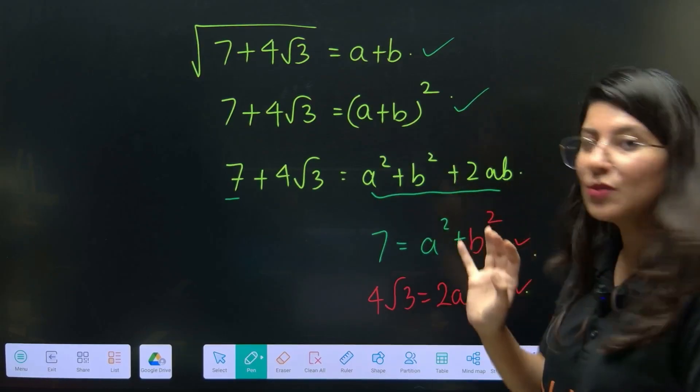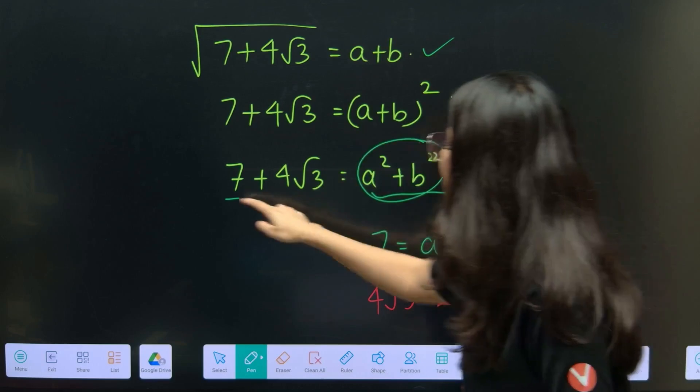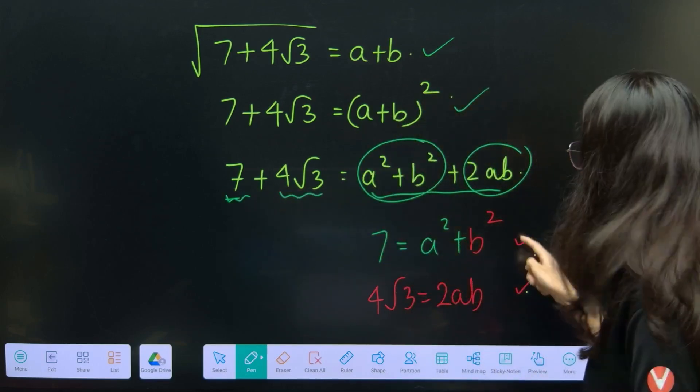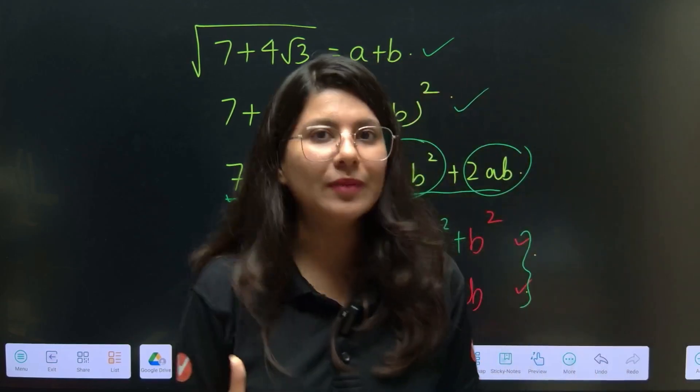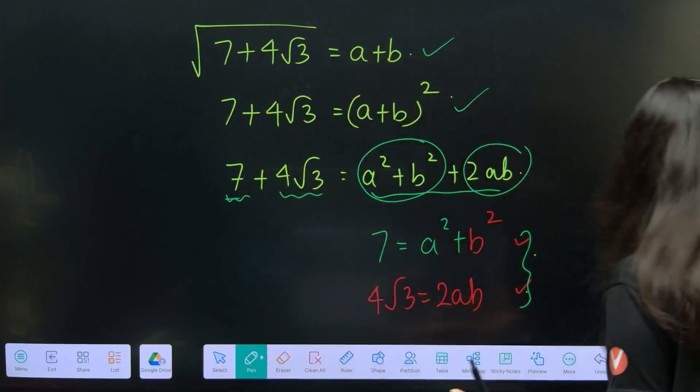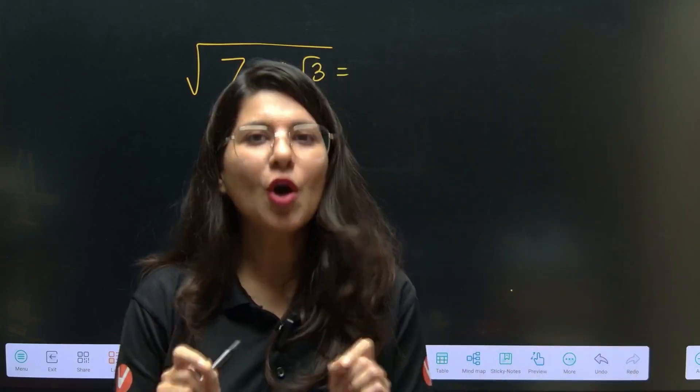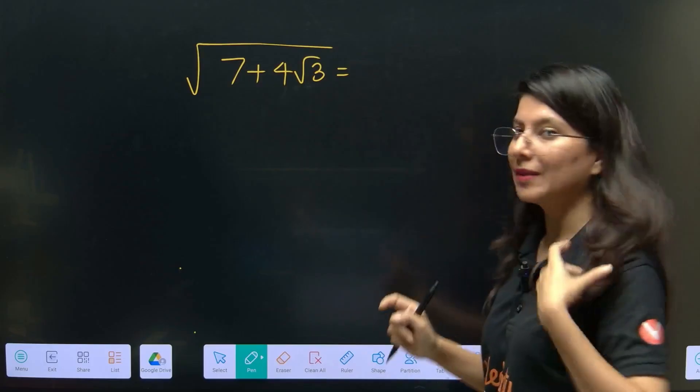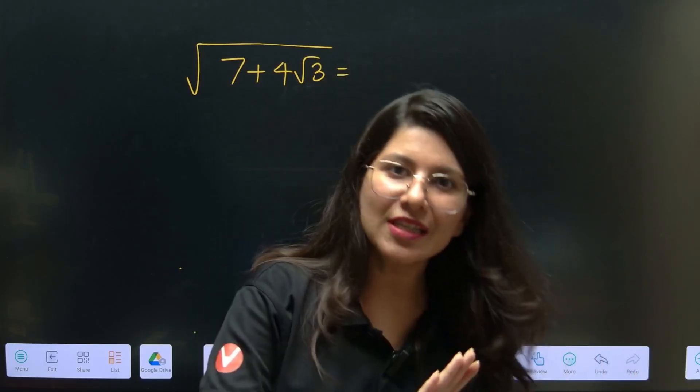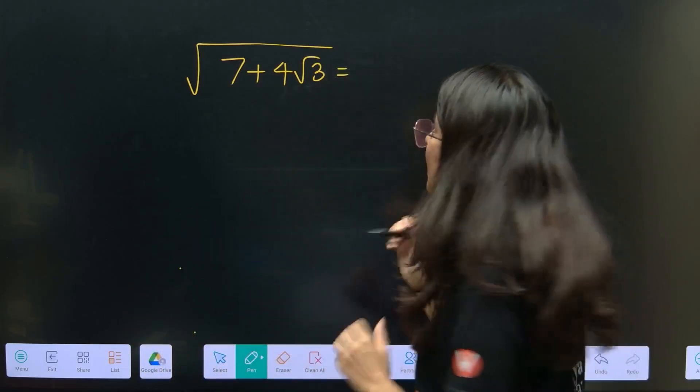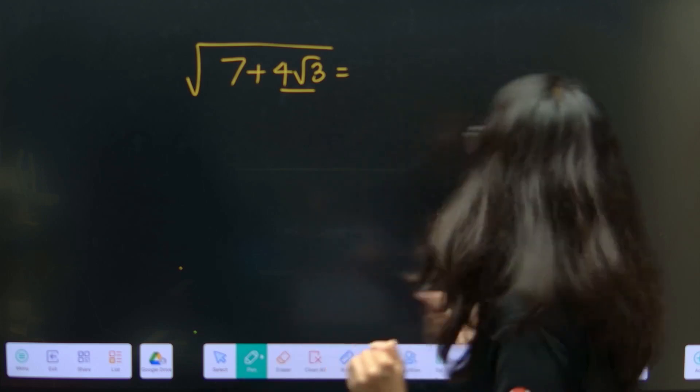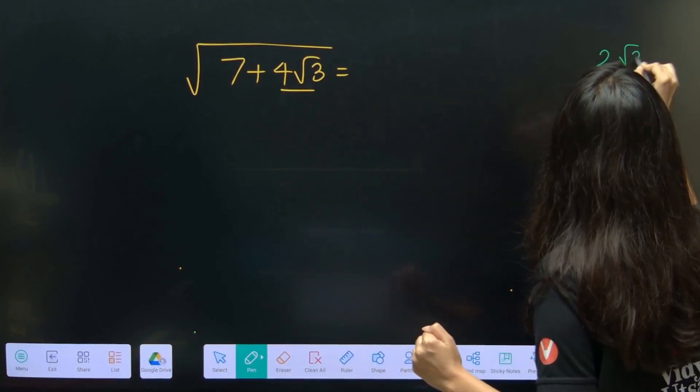Now what you need to do is compare. A square plus B square will be 7 and 2AB will equal 4 root 3, and eventually you need to get the value of A and B. We are also going to do the same thing but with a short trick, some short technique. In such questions, you will find there is a rational number and an irrational number. My focus is on 4 root 3 which is an irrational number, and you have to make half of it. 4 root 3 by 2. 4 root 3 by 2 is 2 root 3.